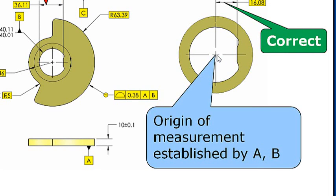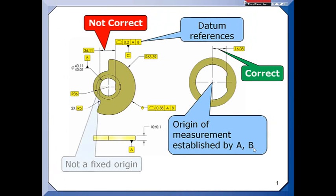So there's my origin of measurement by the datums established by datum features A and B. This is not a fixed origin. Datum feature B could come in larger or smaller and it's not fixed.